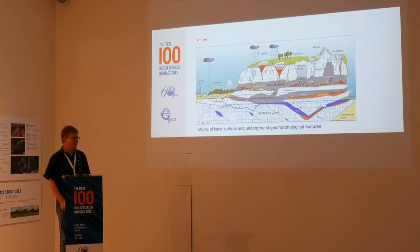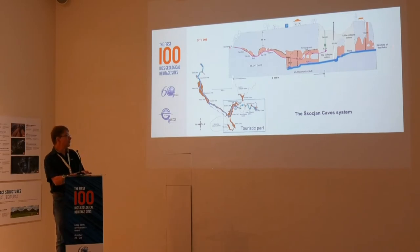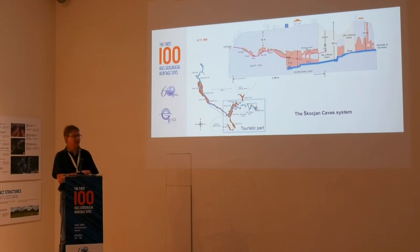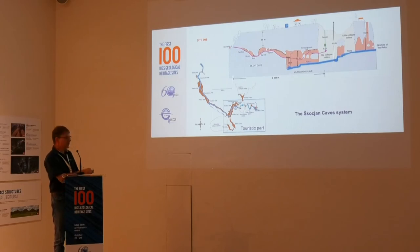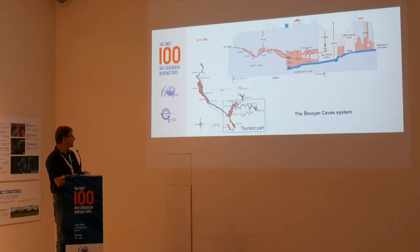Before I take you with some photos to the Škocjan Caves to see how they are developed — just to remind you, this is the touristic part of the cave where you can actually walk. It is not even half of the Škocjan Caves whole system, because the system is more or less six kilometers long. Some of the nicest features, unfortunately, are still hidden from touristic visits. There are now efforts to open more of this part of the cave, including one of the largest underground chambers in the world, or at least in Europe.